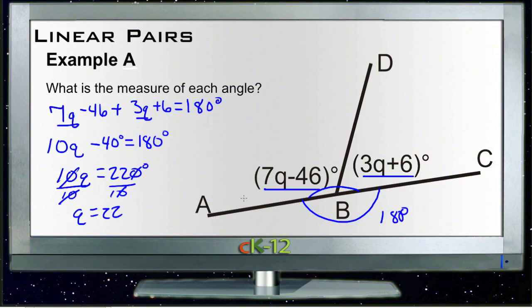So q is 22, then our first angle here, angle ABD, is 7 times 22 minus 46. So 7 times 20 would be 140 plus 14 would be 154 minus 46 would be 108 degrees.